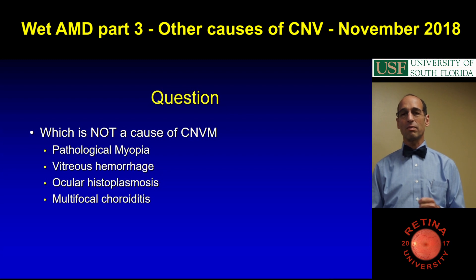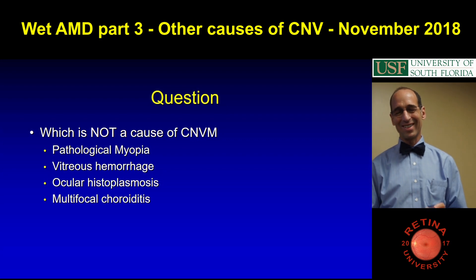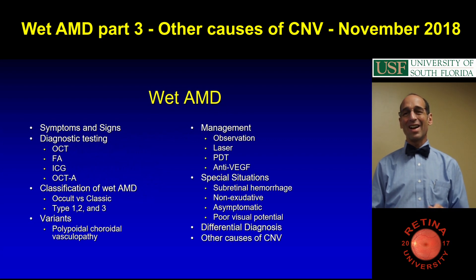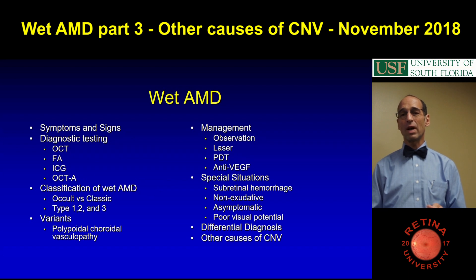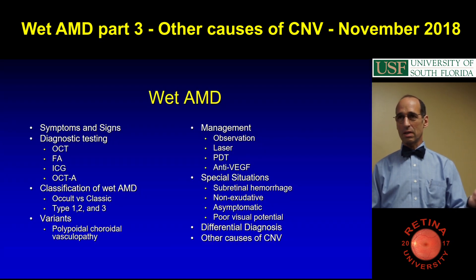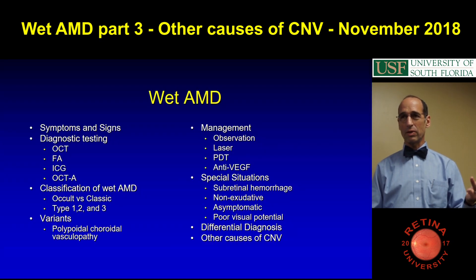Which is not a cause of CNVM? This is our little question: myopia, vitreous hemorrhage, chakras, multifocal choroiditis. So other causes of wet AMD — other causes of neovascular membrane are mostly high myopia, angioid streaks, histoplasmosis, idiopathic if nothing else is there, and then Mactel.